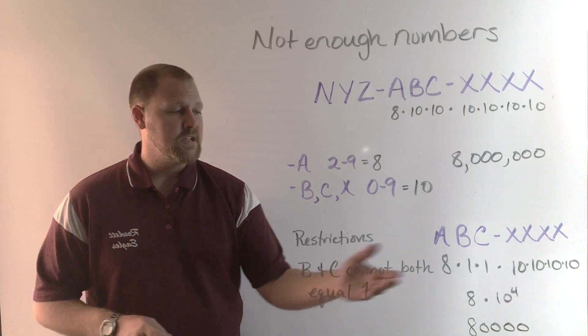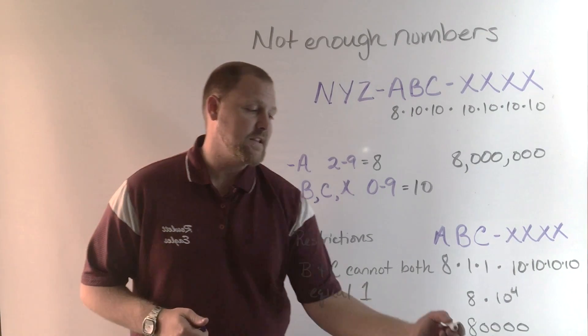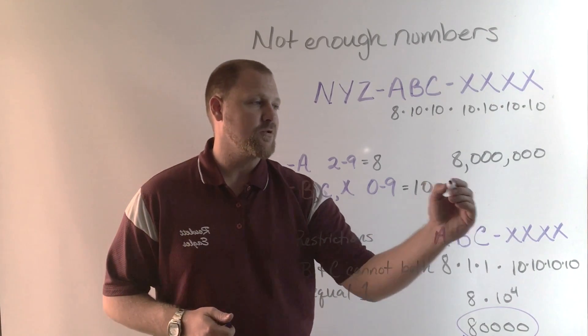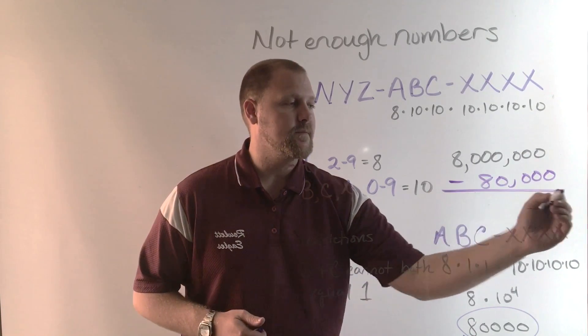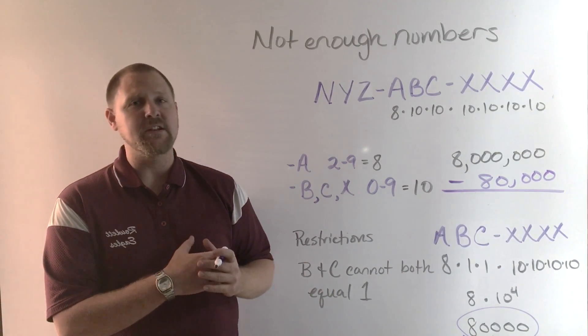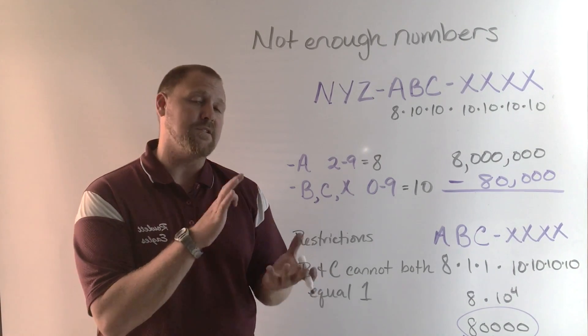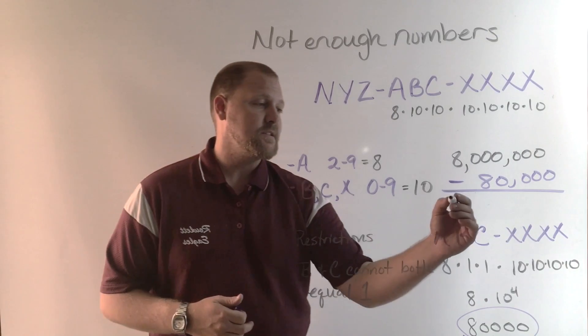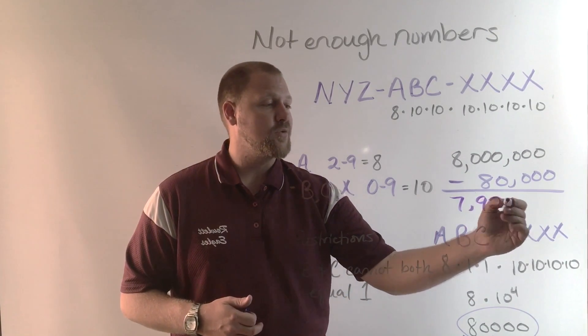So we have these restrictions. These are numbers that cannot exist. So we have to take this 80,000 and subtract it away from this 8 million. And so the number of 7-digit phone numbers that exist inside of a single area code based on these rules is 7 million 920,000.